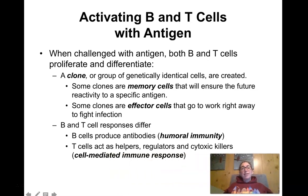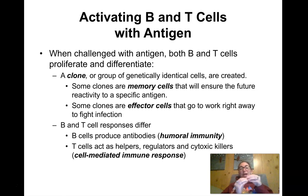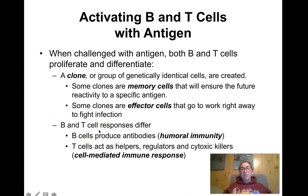When a B or T cell is presented with antigen — when you challenge it — that's when it becomes activated. That is clonal selection: finding the clone with the right receptor that matches that antigen. It starts to proliferate and can produce either memory cells that last forever or effector cells that start doing stuff right away. B cells produce antibodies — we call that humoral immunity — and T cells have different functions: helpers, cytotoxic killers, and regulators, collectively known as cell-mediated immune responses.